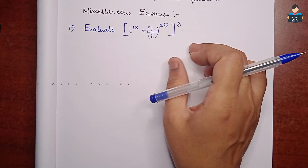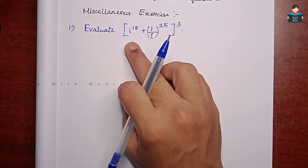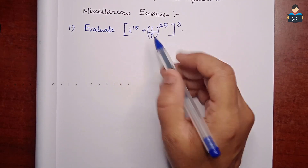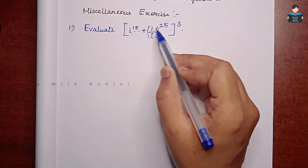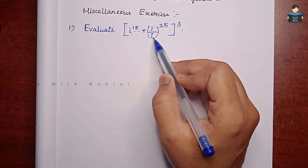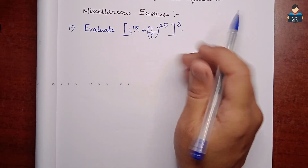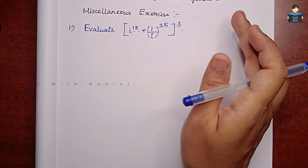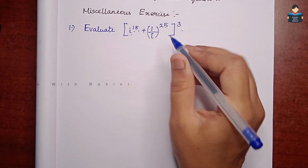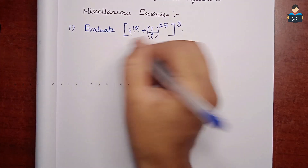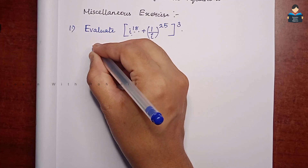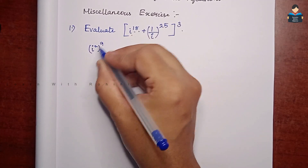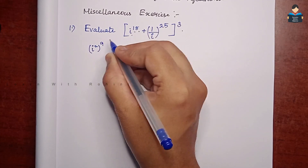So to solve this sum, first we look at i to the power 18 and i to the power 25. For the first term, we express it in terms of i square. So i to the power 18 is (i square) the whole power 9, since 2 into 9 is 18.